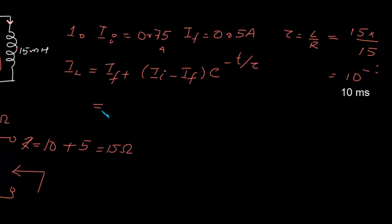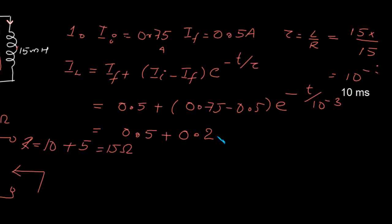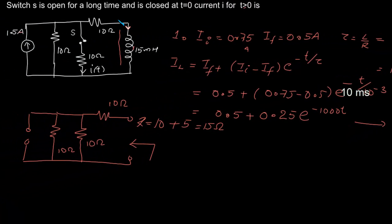The current through the inductor is: i_L(t) = 0.5 plus (0.75 minus 0.5) times exponential of minus t by 10^-3. This simplifies to 0.5 plus 0.25 times e^(-1000t). This is the current through the inductor.